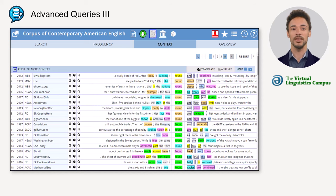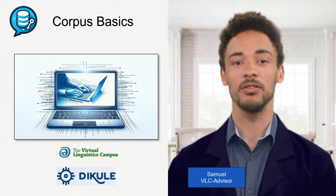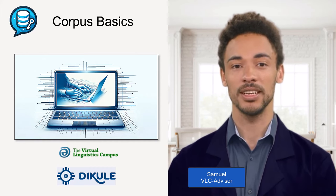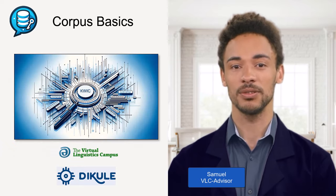Further information is available via the question mark, and the sorting can be changed in the top right corner if necessary. That's an overview of the KWIC option. As a recommendation, try the KWIC search with further POS tags to practice. Thanks for your attention, and see you again soon.